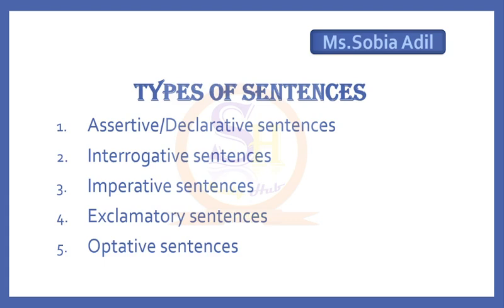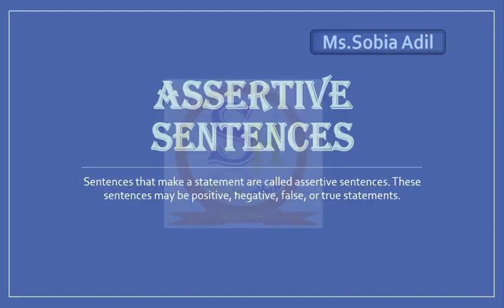So today we are going to deal with the types of sentences. I will tell you the types of sentences and we will deal with the first one. Number one is assertive sentences, also called declarative sentences. Number two is interrogative sentences. Number three is imperative sentences. Number four, exclamatory sentences. And number five, optative sentences. So we will deal today with assertive sentences.